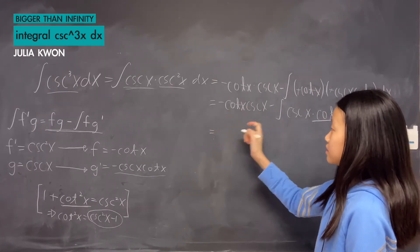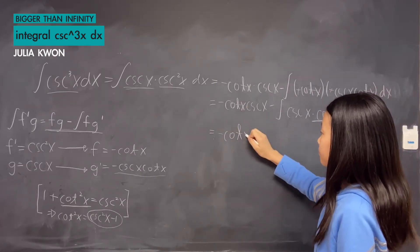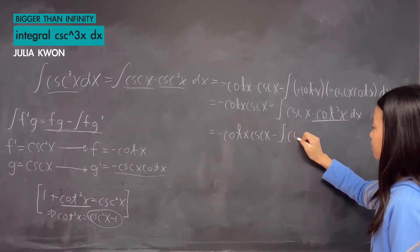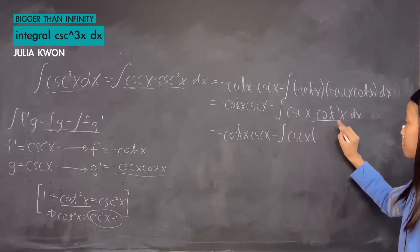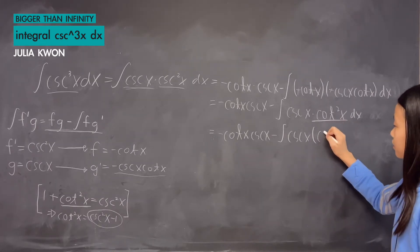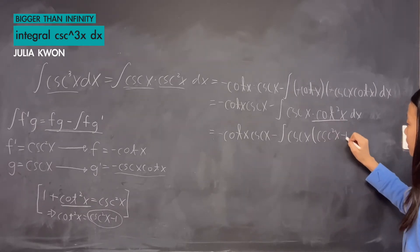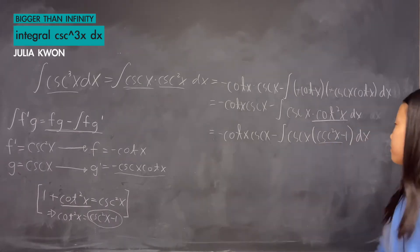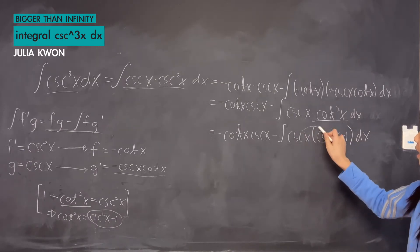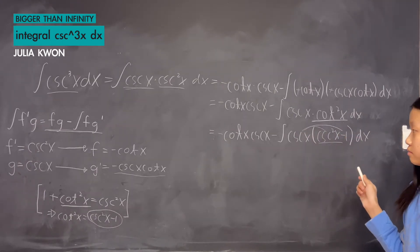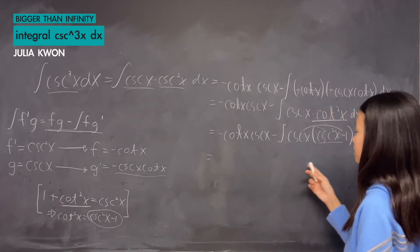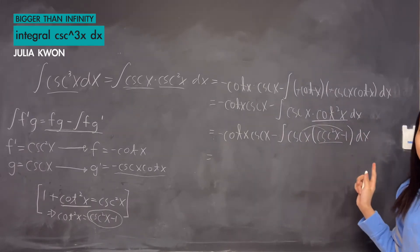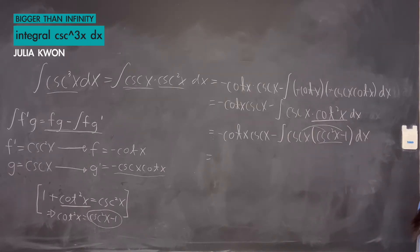So the first term can stay the same. Minus the integral of cosecant x times cotangent squared x, which we replace with cosecant squared x minus 1. We multiply those together and separate the two integrands so that we would have two different integrals.